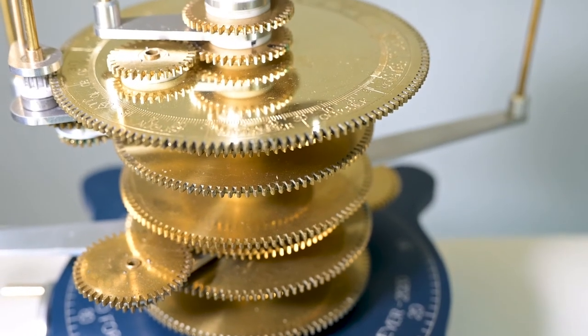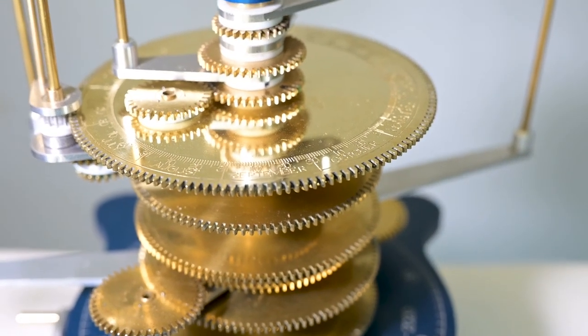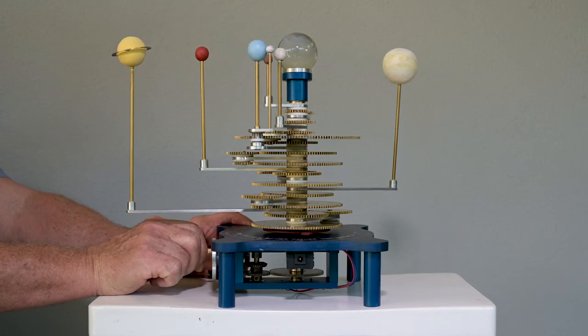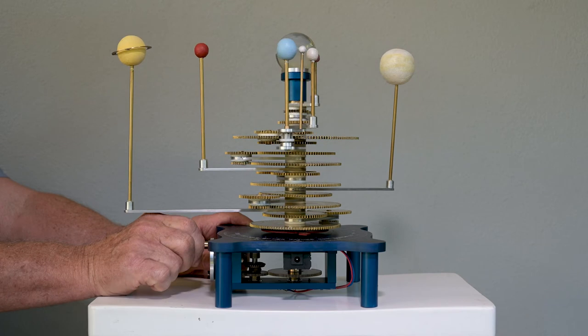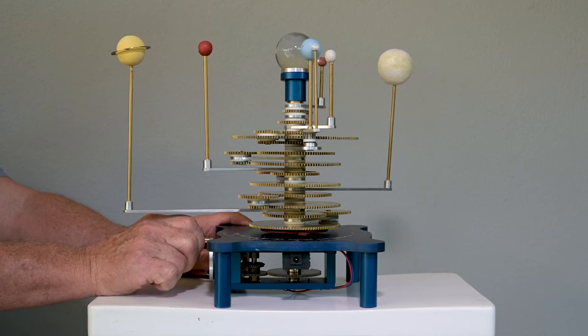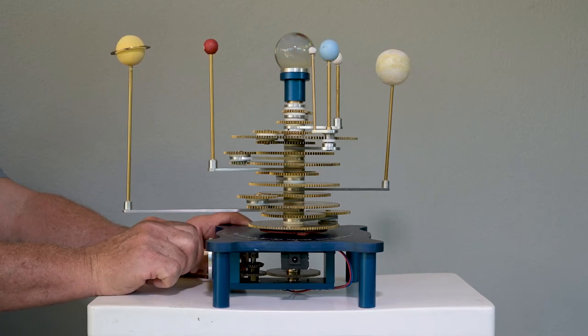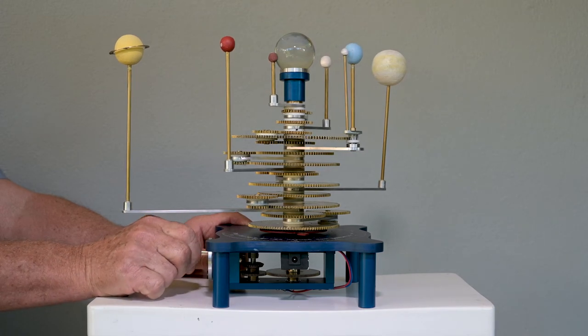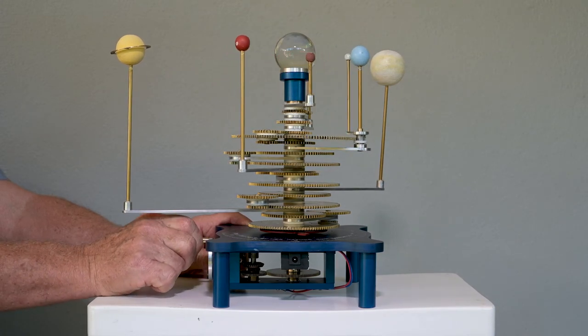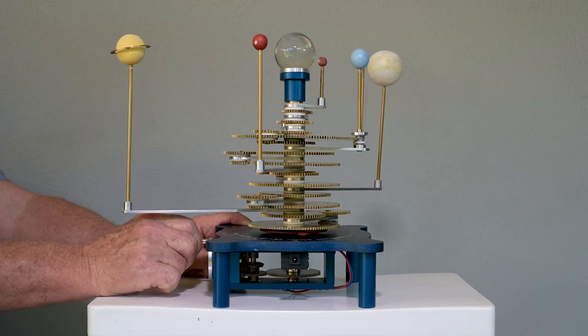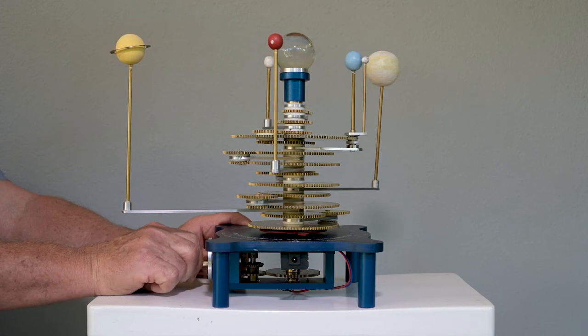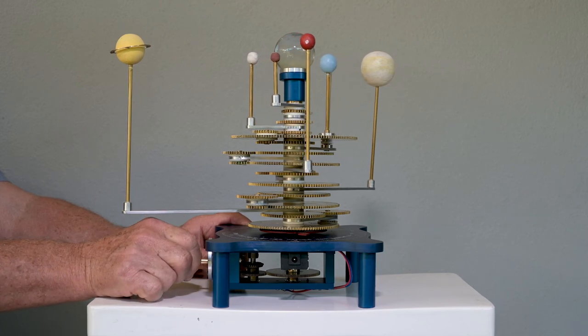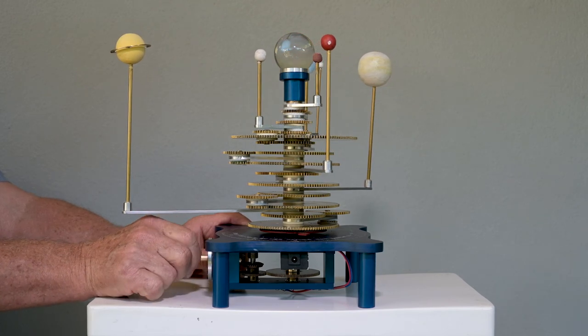The desired position is then set by forced rotation of the planet arms. This forced movement is possible as the planet arms are fixed to the shaft by a Teflon clutch. With the desired positions set, the crank can be rotated to any date, a century in the future or in the past. The position indicated by the orrery will be accurate within 0.5%.